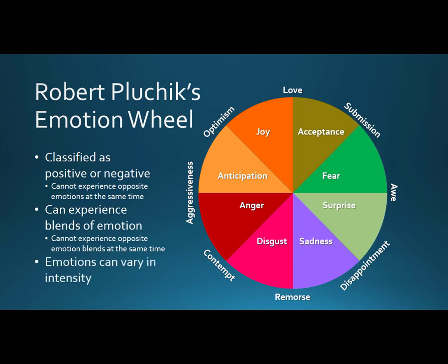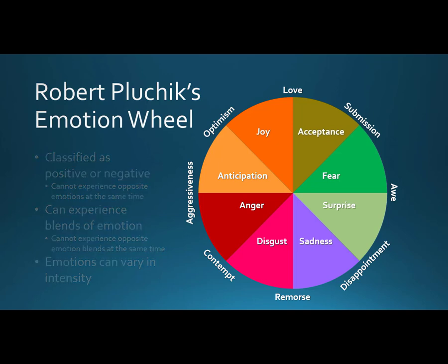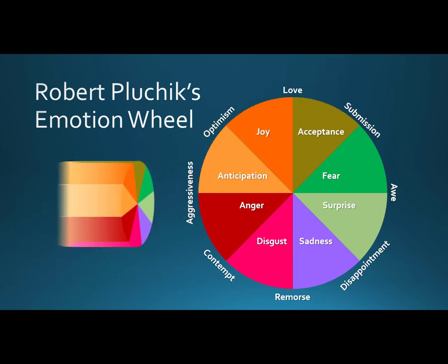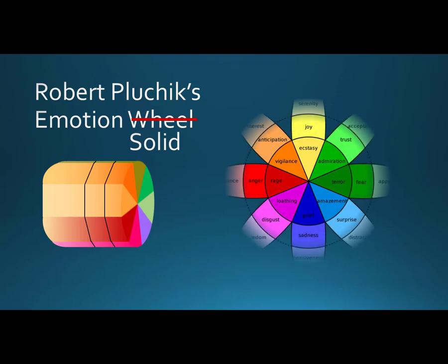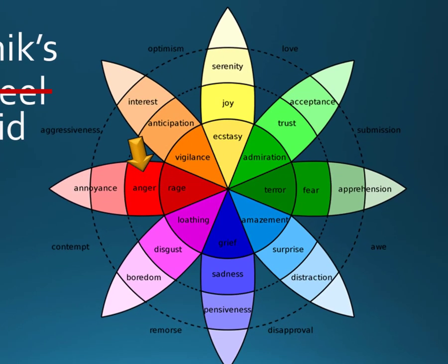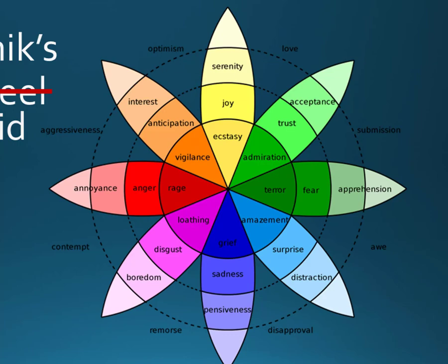Plutchik also proposed that emotions vary in their intensity. Think of the emotion wheel as just one level or row in a solid cylinder, often called the emotion solid. The emotions at the top of the solid, above Plutchik's basic emotions, are more intense, while those at the bottom of the solid are less intense. You can probably see it easier if we spread out the solid. Notice that anger, when more extreme, is rage, while when less intense, it is merely annoyance. More intense than joy is ecstasy, while serenity is a more muted emotion. As emotions become less intense, they are more difficult to tell apart and label.